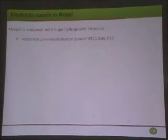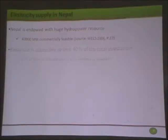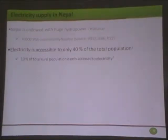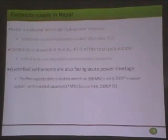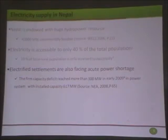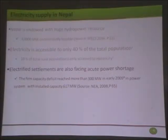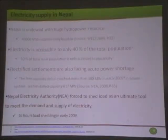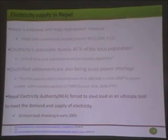Let's discuss about electricity supply in Nepal. Nepal is endowed with very huge hydropower resources — we claim more than 43 gigawatt of commercially feasible hydropower. But unfortunately, electricity is available only to 40% of the total population, and only 10% of rural populations have access to electricity. Electrified settlements are also facing acute power surges, with a firm capacity deficit of more than 300 megawatt out of a total installed capacity of 617 megawatt. The national utility company, Nepal Electricity Authority, is forced to use load shedding as a tool to balance supply and demand — we already observed 16 hours of load shedding in early 2009.